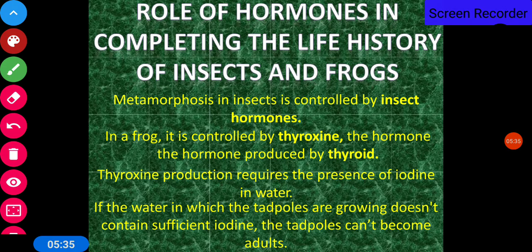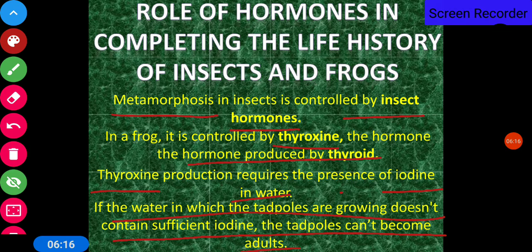The role of hormones in completing the life history of insects and frogs: in insects, metamorphosis is controlled by insect hormones. In frogs, it is controlled by thyroxine, the hormone produced by the thyroid. Thyroxine production requires the presence of iodine in water. If the water in which tadpoles are growing does not contain sufficient iodine, the tadpoles cannot become adults. Just like us, these animals also have glands producing thyroxine responsible for completing their life history.